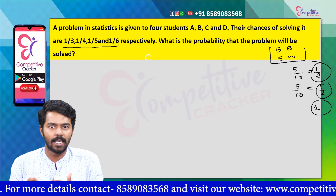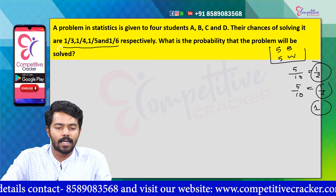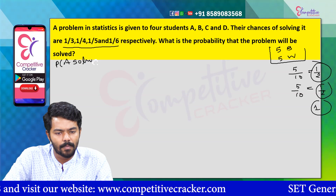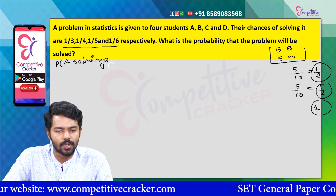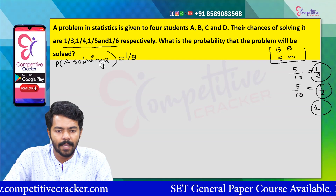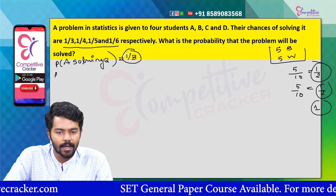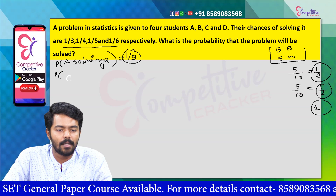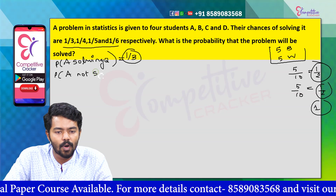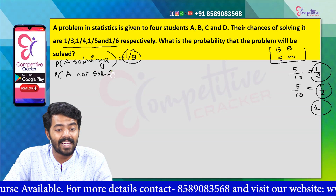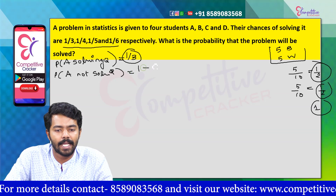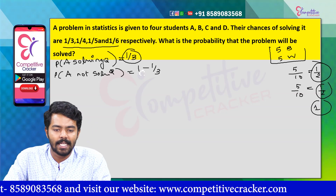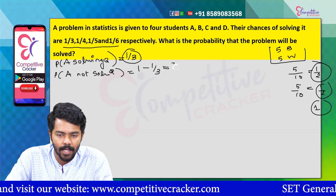So if we are going to do this, we will be clear. Okay, now let's go. Probability of A solving the problem — what is the probability of A solving the question? That is 1 minus 1 by 3 is equal to 2 by 3.